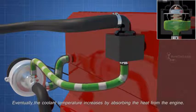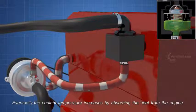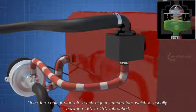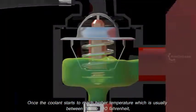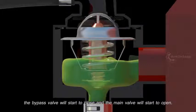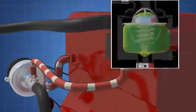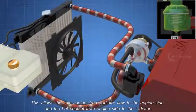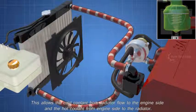Eventually, the coolant temperature increases by absorbing the heat from the engine. Once the coolant starts to reach higher temperature, which is usually between 160 to 190 Fahrenheit, the bypass valve will start to close and the main valve will start to open. This allows the cold coolant from radiator flow to the engine side, and the hot coolant from engine side flow to the radiator.